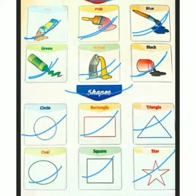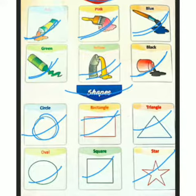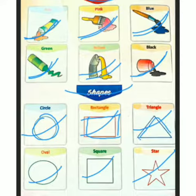Circle. Circle. Rectangle. Standing Line. Sleeping Line. Triangle. Slanting. Slanting. Sleeping. Open. Circle.